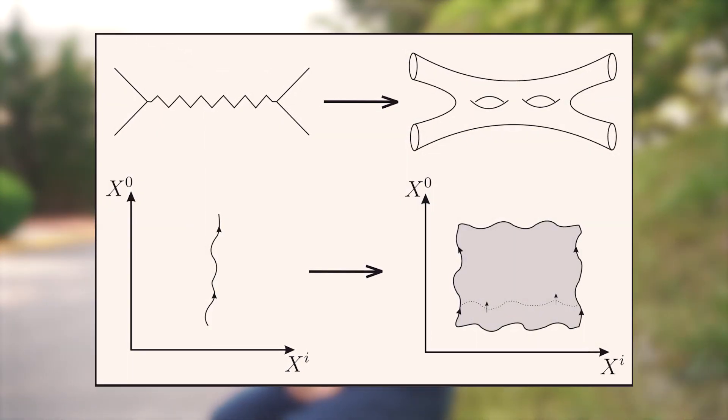String theory is the idea of substituting point particles with one-dimensional strings that can be either open or closed, with lengths roughly 10 to the negative 33 centimeters long. At distance scales greater than the string scale, a string would look just like a particle, with its properties being the result of variances in vibrational modes. In this sense, we can view all elementary particles as vibrating strings. Additionally, string theory replaces Feynman diagrams with surfaces and worldlines with world sheets. A worldline is the path that an object traces out in four-dimensional spacetime, and a Feynman diagram is a visual representation of the mathematical expressions describing the behavior of subatomic particles.